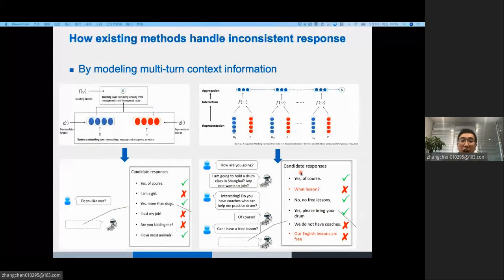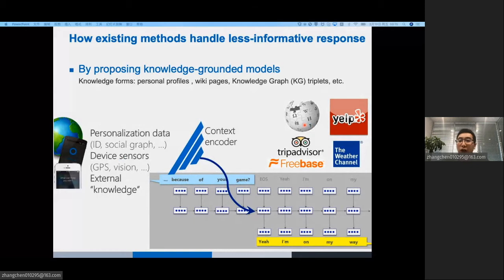Let's see how existing methods handle the first issue of inconsistent response. They model multi-turn context by using an RNN network and hope that the context information can help to produce consistent response. In terms of the second issue, the knowledge-grounded models have been introduced to make the dialogue more informative. The use of knowledge has many forms, such as personal profiles and wiki pages.